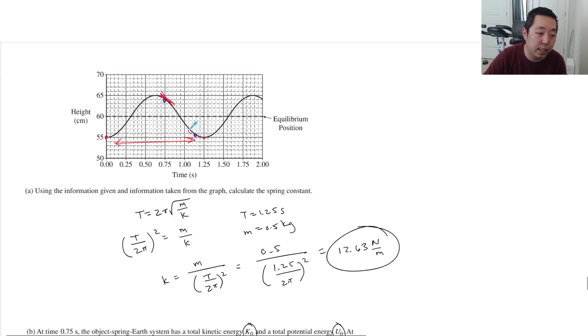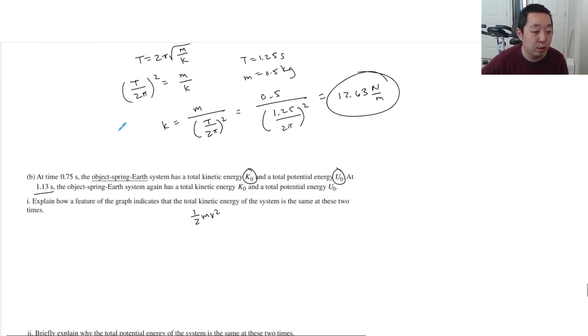So kinetic energy is 0.5 mv squared, right? So I want to know about the v. One way to think about it, the most direct way about the kinetic energy is that the slopes of the tangent lines, right? The slope of the line tangent to that point is the velocity. So they have the same slopes at that point, I would say. At those two points, the slope of the tangent line has the same magnitude. It doesn't have to be positive or negative. Magnitude, thus has the same speed and thus the same kinetic energy. That's what I would talk about. That's the feature of the graph I would focus on.